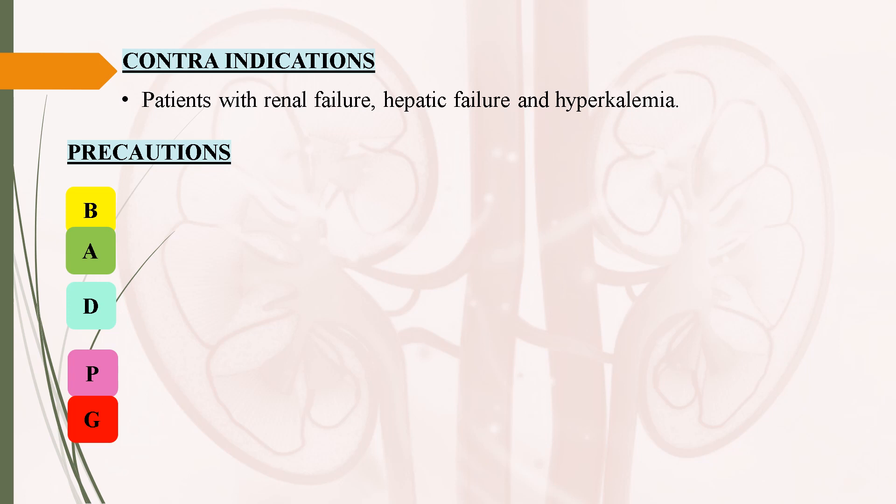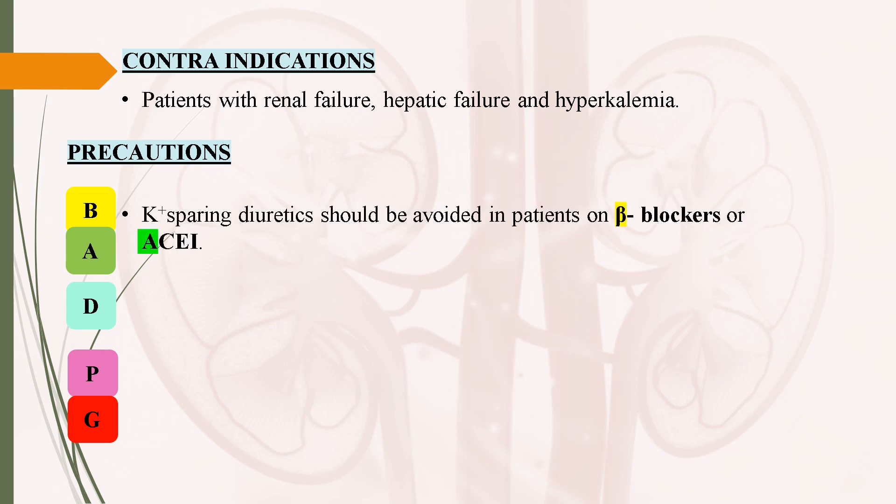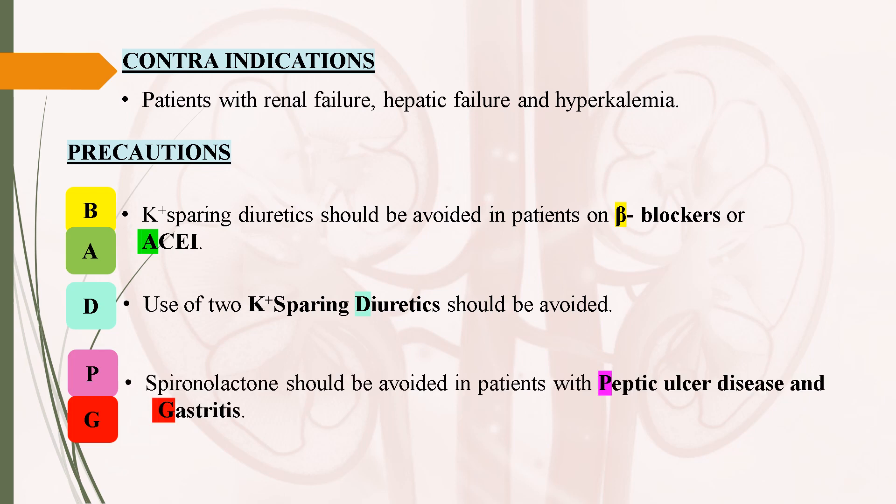Coming to contraindications: these drugs are contraindicated in patients with renal failure, hepatic failure, and hyperkalemia. Coming to precautions: you can remember these with the mnemonic BAD PG, where B stands for beta blockers, A stands for ACE inhibitors, D stands for diuretics, P stands for peptic ulcer/cirrhosis, and G stands for gastritis. Potassium-sparing diuretics should be avoided in patients on beta blockers or ACE inhibitors. Use of two potassium-sparing diuretics together should be avoided. Spironolactone should be avoided in patients with peptic cirrhosis and gastritis.